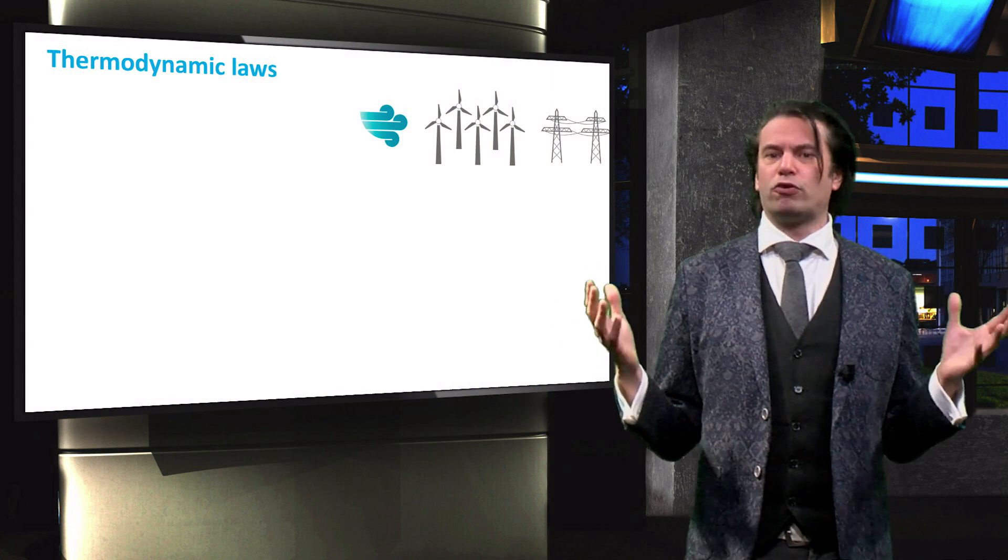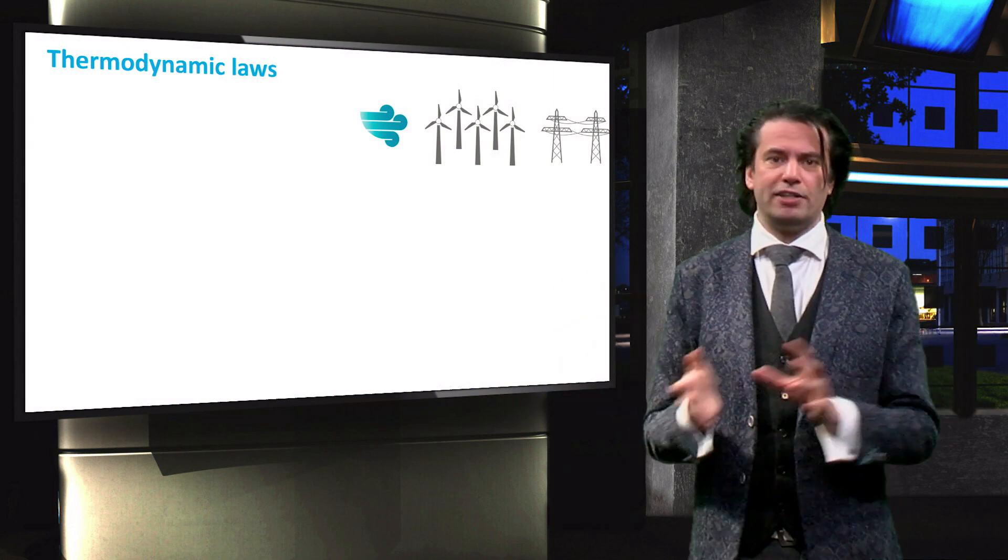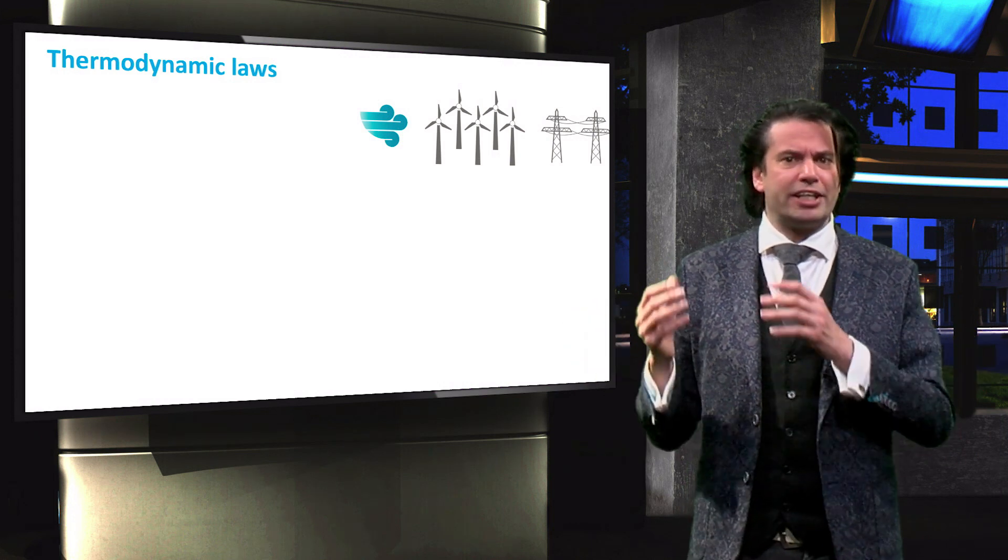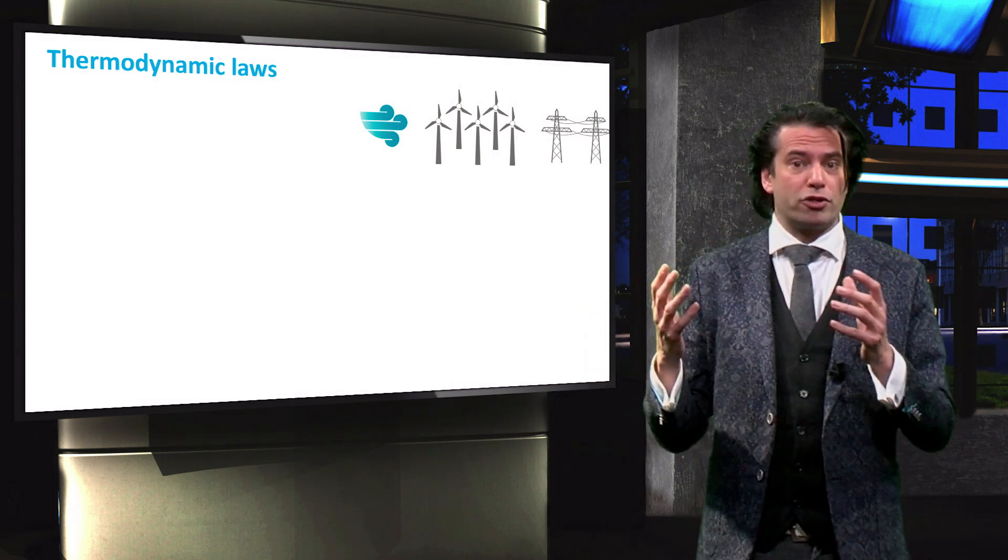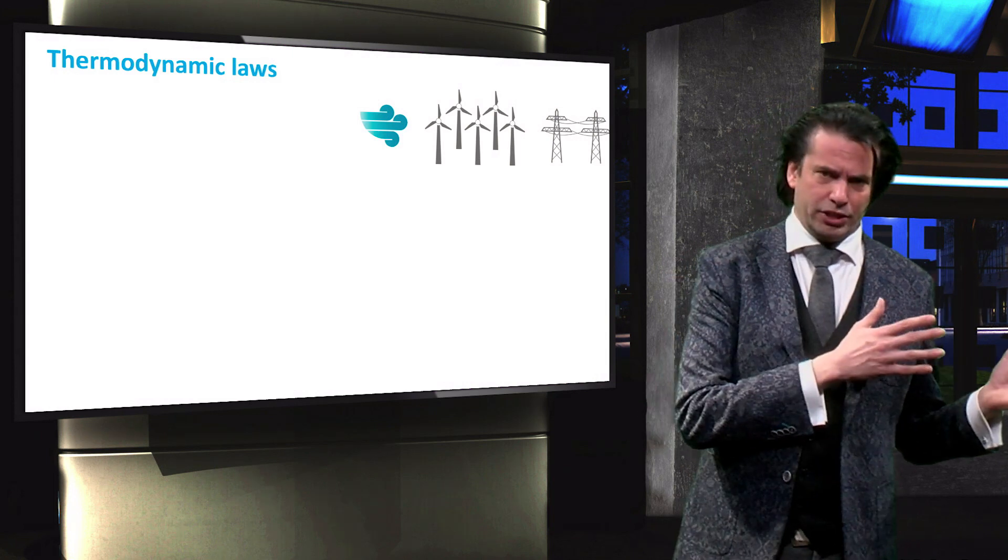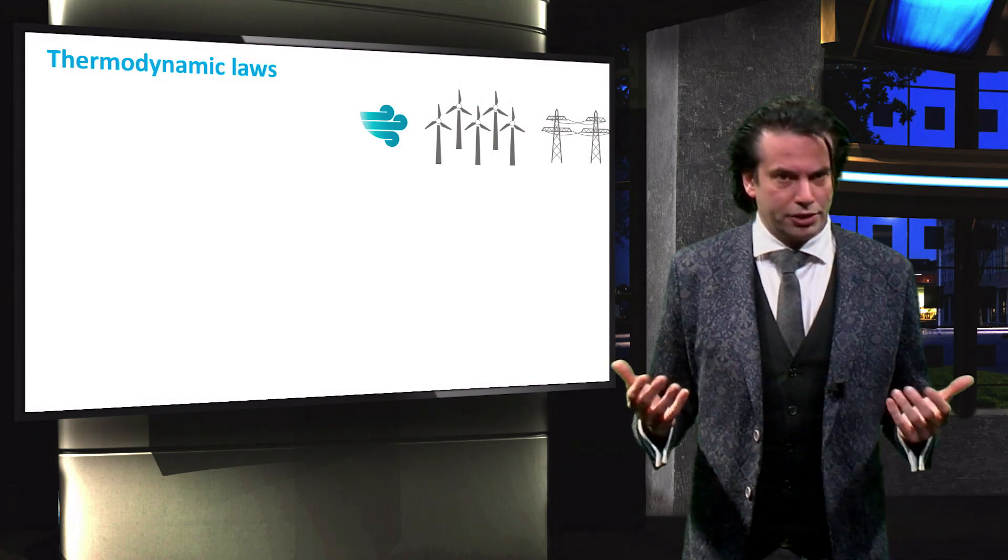We discussed how energy can be converted from one form into another form. Practical examples are wind turbines that convert the kinetic energy contained in the particle flow that we know as the wind into mechanical energy, which is then converted into electrical energy.